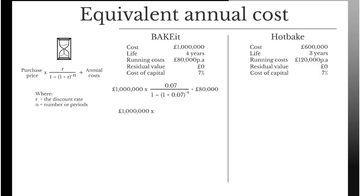Start with the Bake It. We've got our purchase price of £1,000,000, then we've got our rate at the top of the formula, and then we have got our number of periods which is 4, so we have negative 4 in the calculation. We have our £80,000 in annual costs. We add 1 and 0.07 together to make 1.07, multiply that to the power of negative 4, and that gives us 0.763, which we are now going to deduct from 1 before we then divide the 0.07 by the answer, the answer being 0.237.